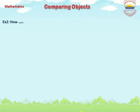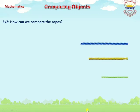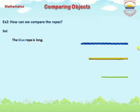Example 2: How can we compare the rows? There are three rows of different lengths. We compare them according to their length. Solution: The blue row is long. Look at the picture — the blue row is long and it is longer than the yellow row.